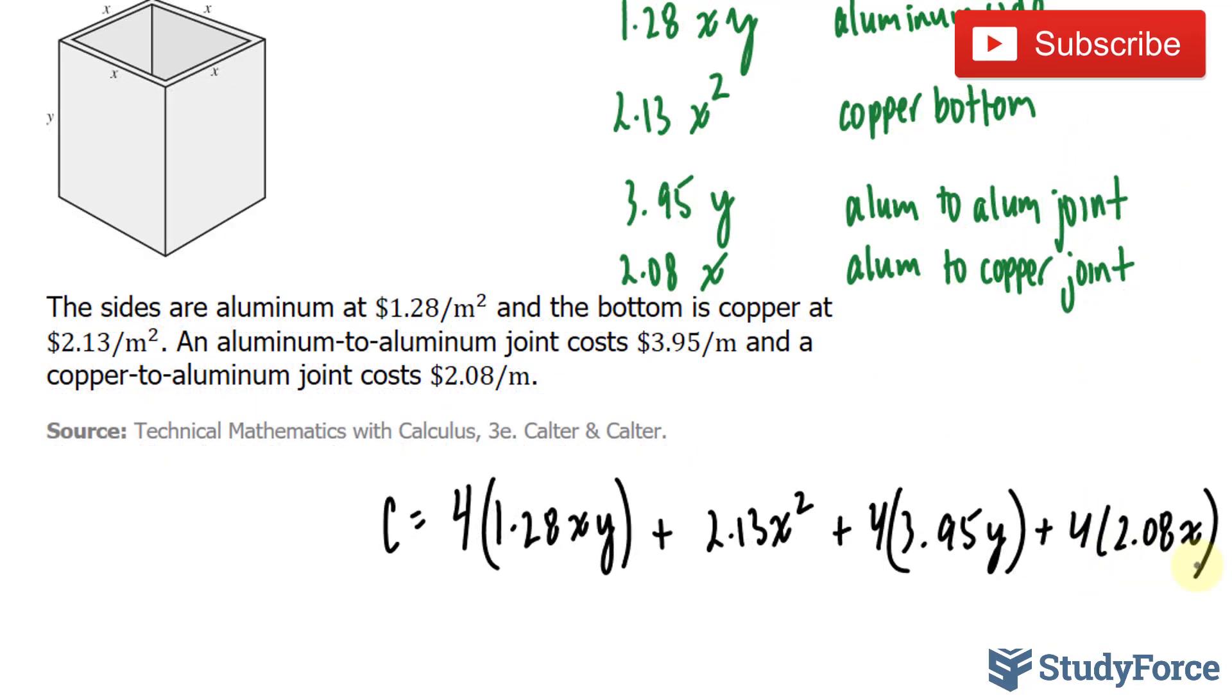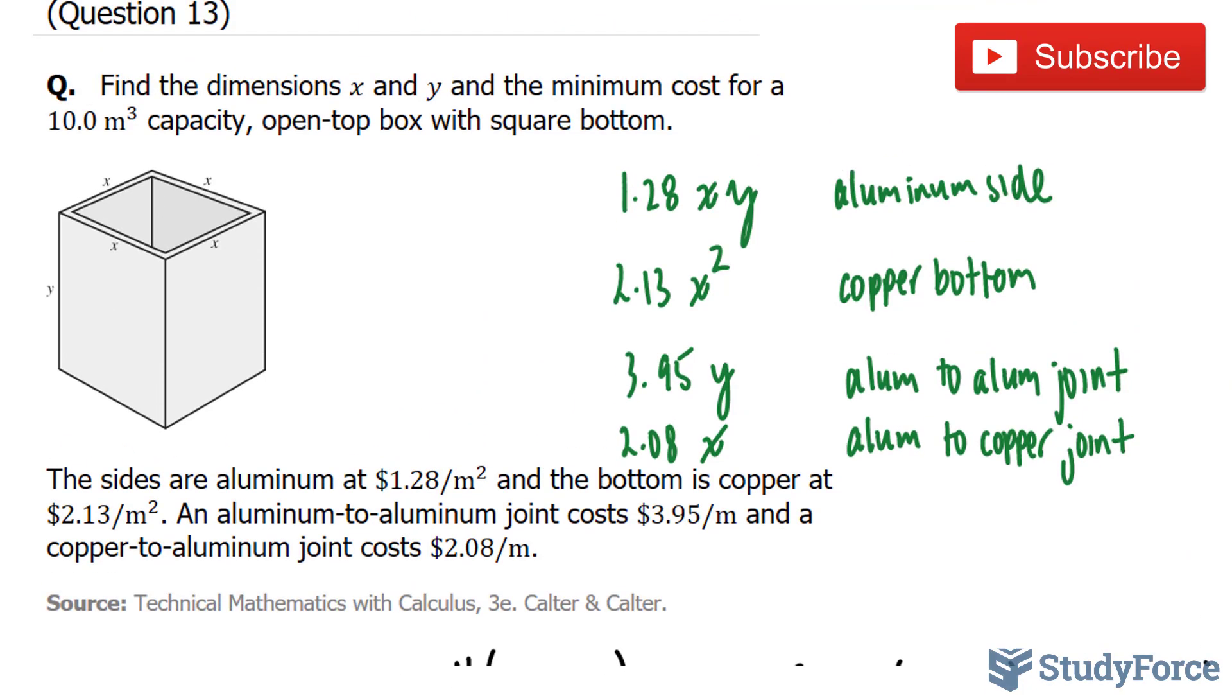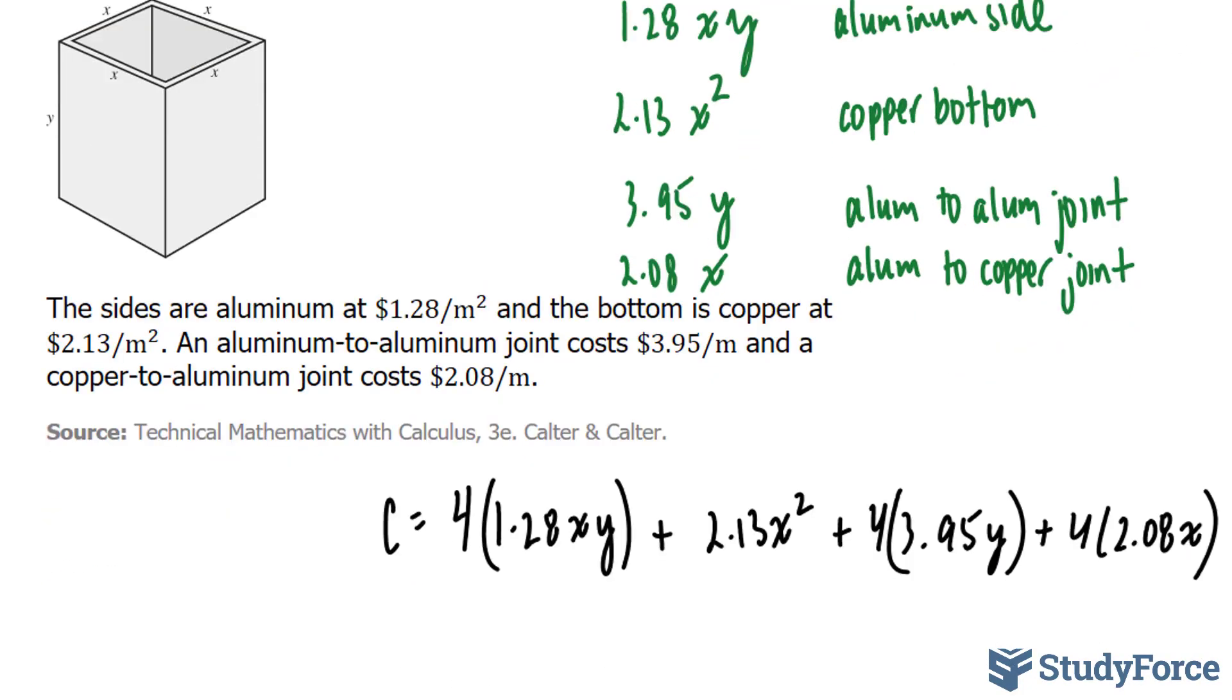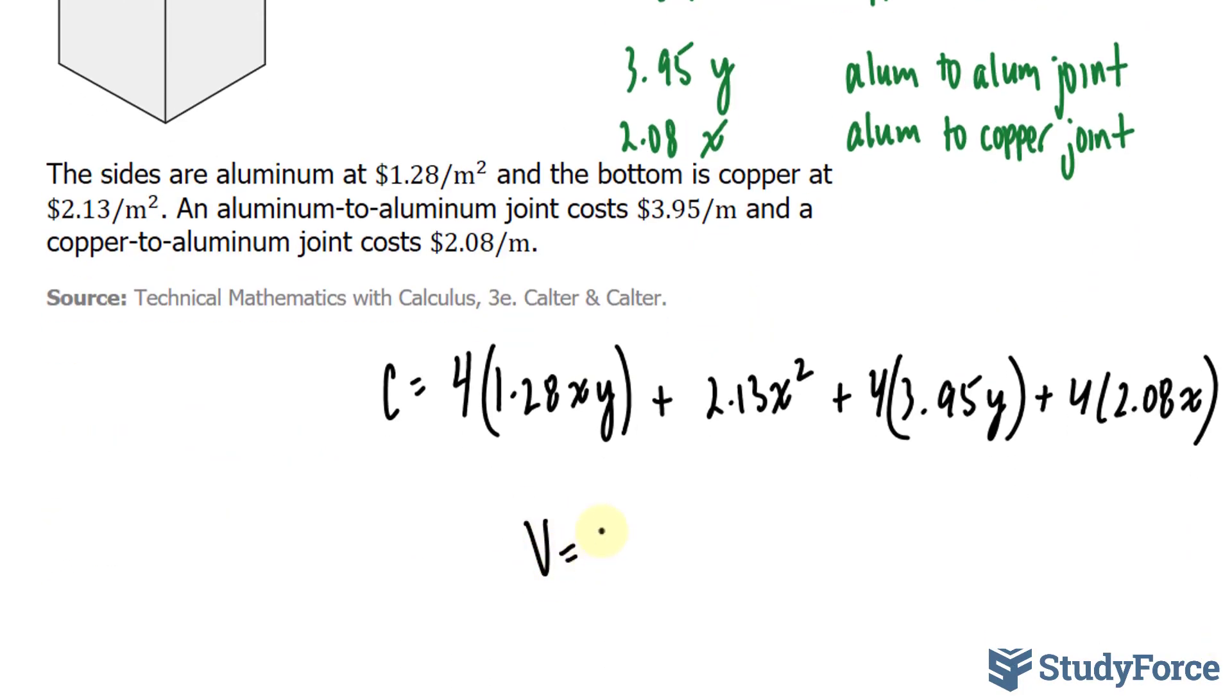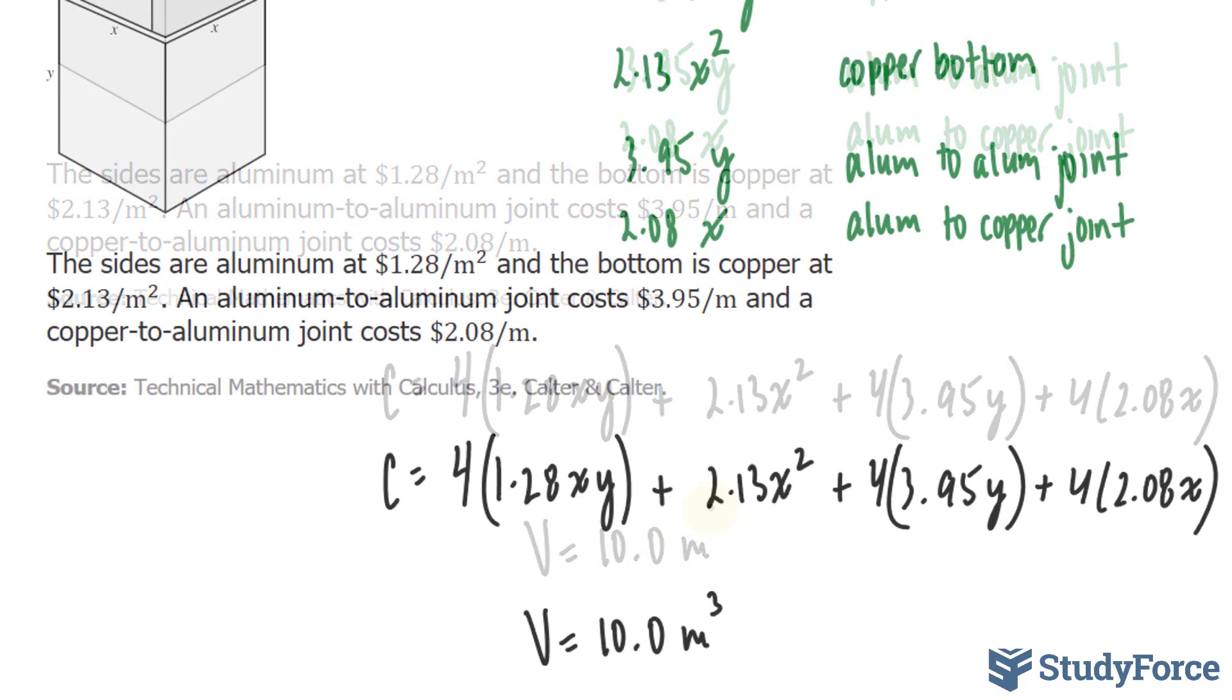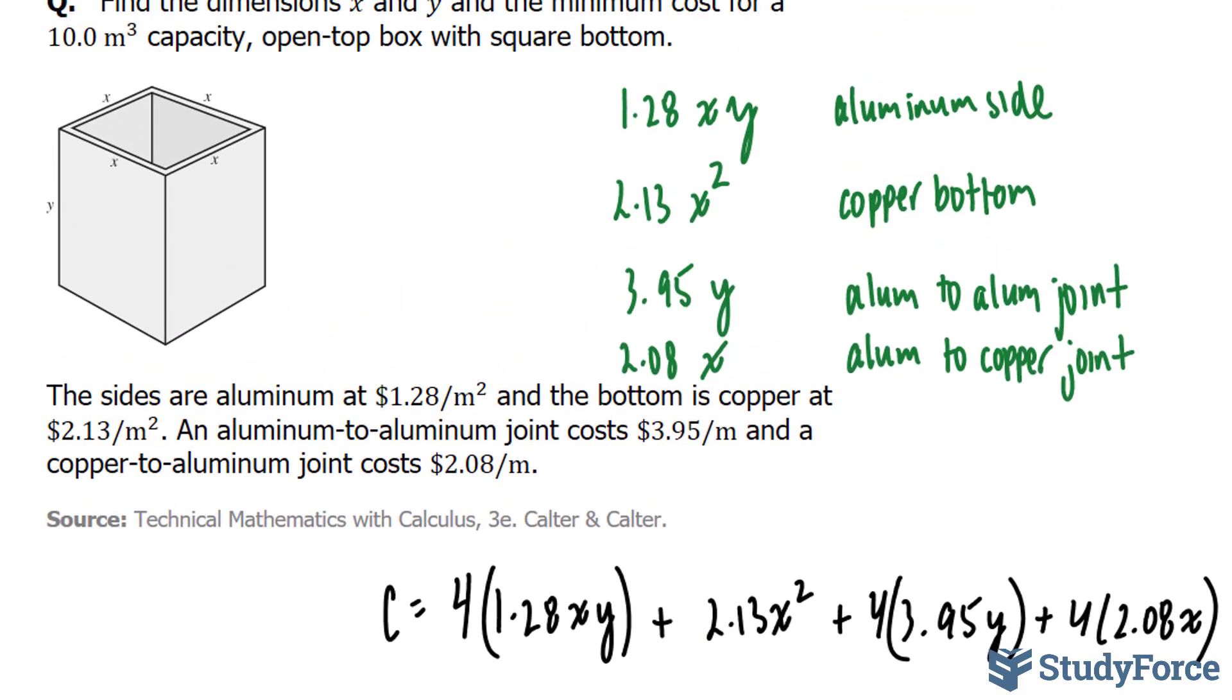Now, what's interesting about this question is they tell us what the volume is. They tell us that it's 10 meters cubed. Volume equals 10 meters cubed. And if you look at this diagram carefully, the volume of a square based prism is v equals length times width times the height. The length and the width are the same, so we can replace that with x squared, x times x, and the height is y. The volume, of course, is 10.